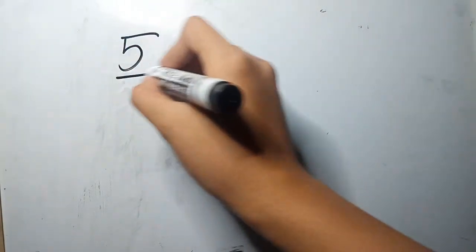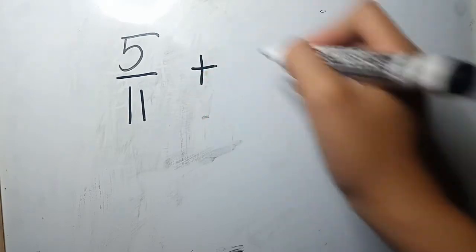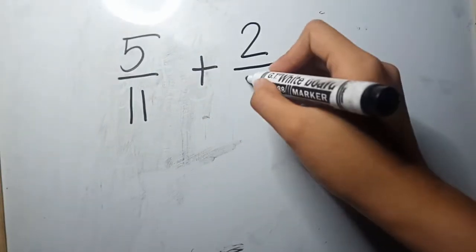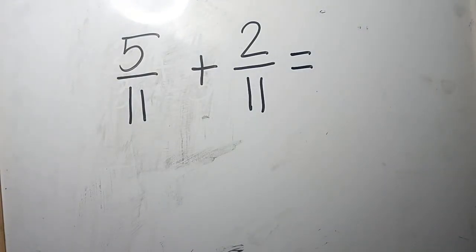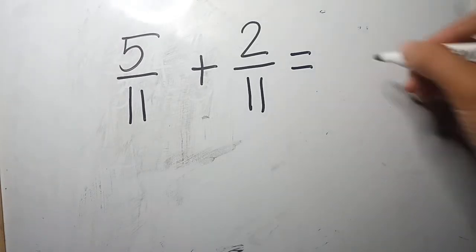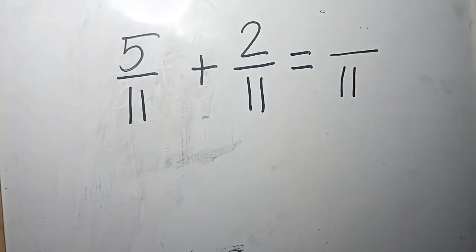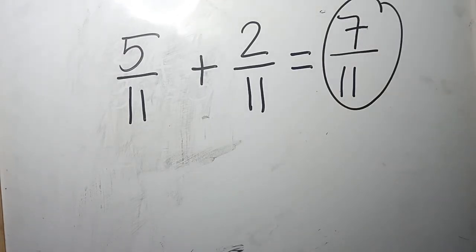Let's have another example in adding similar fractions. Let's say, 5 over 11 plus 2 over 11. The fraction is a similar fraction because both denominators are the same. So, we will just copy the common denominator and then add the numerators. 5 plus 2 gives us 7. Therefore, 5 over 11 plus 2 over 11 is equal to 7 over 11.